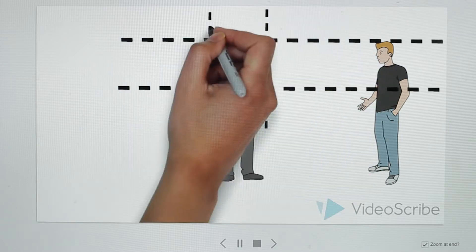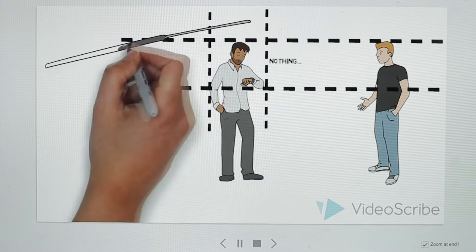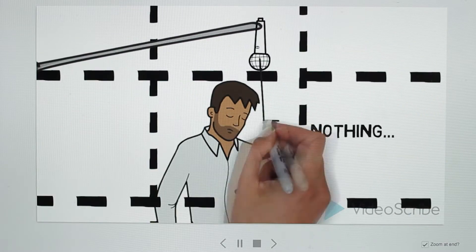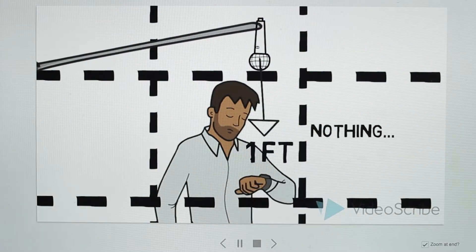This next shot is a close-up of our subject from the same scene. Since the frame is smaller in this shot, our boom operator is able to get the mic closer to the subject at one foot away.